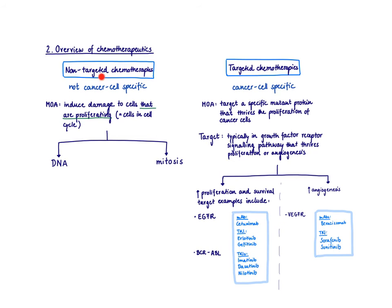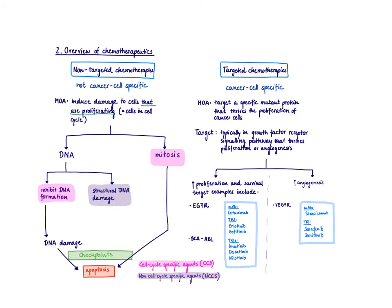Let's go back to non-targeted chemotherapy — drugs that just hit fast-proliferating cells, meaning cells in the cell cycle. How can you interfere with the cell cycle? You can damage DNA or you can interfere with mitosis. To damage DNA, you can either inhibit DNA formation — for example using drugs that prevent the synthesis of DNA so you don't have enough purines or pyrimidines — or you can interfere with topoisomerases, enzymes required for DNA formation. Alternatively, you can cause very severe structural DNA damage and simply break it apart.